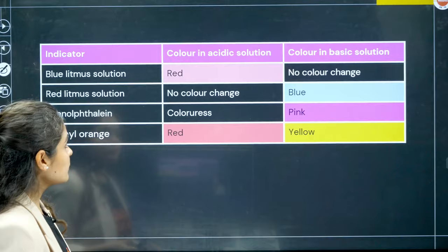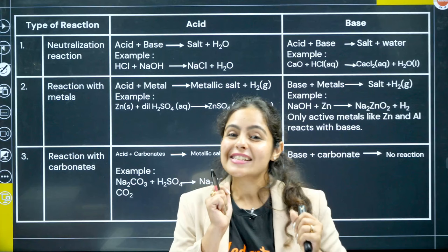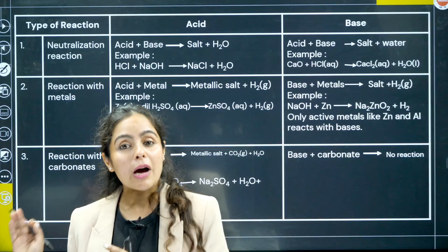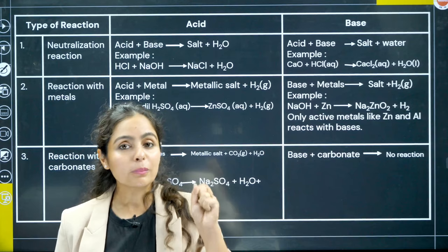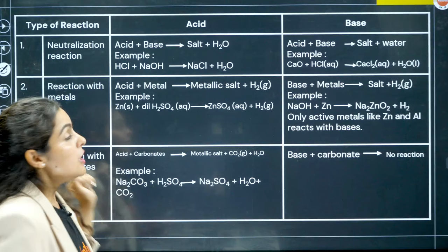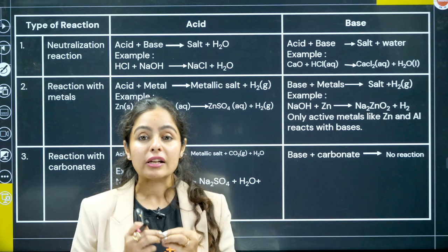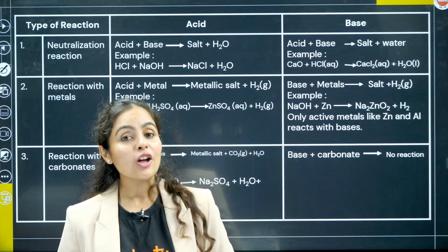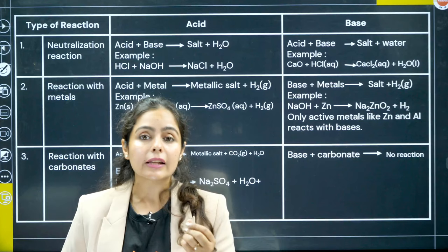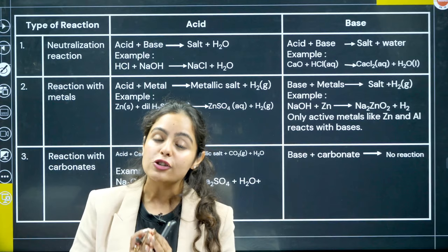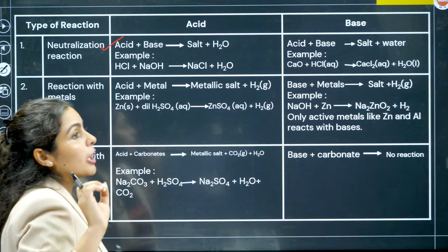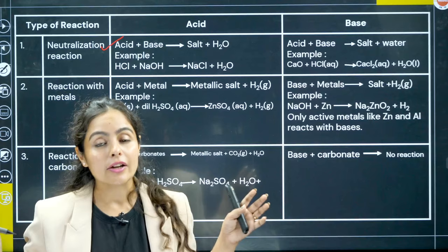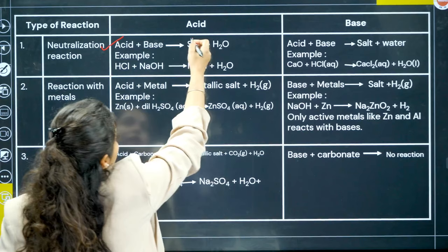Now, coming to chemical properties of acids and bases. Starting with neutralization reaction — when acids and bases react, their properties neutralize and nullify each other. For example, if you eat a lot of puchkes and get acidity, you take Eno to relieve it — that's a neutralization reaction. The general reaction is: Acid + Base → Salt + Water. For example, HCl + NaOH → NaCl + H2O. Similarly, metal oxides (which are basic) react with acids to give salt and water.